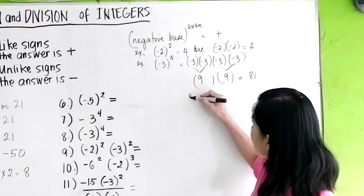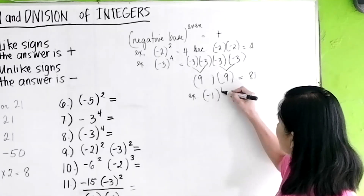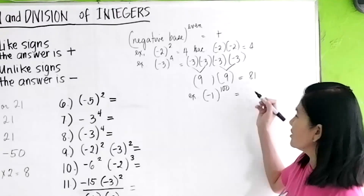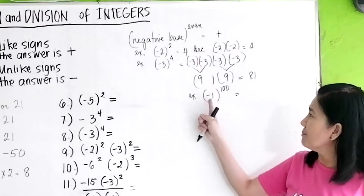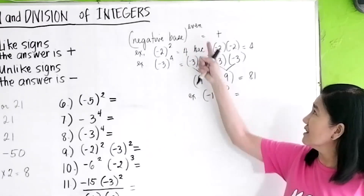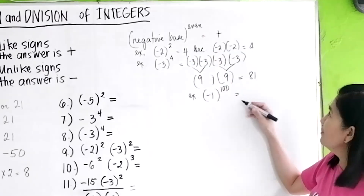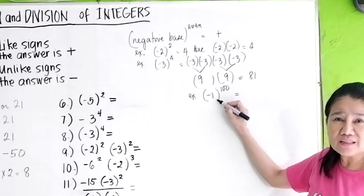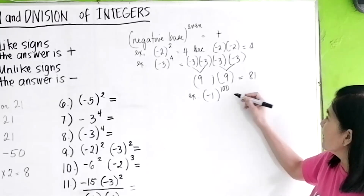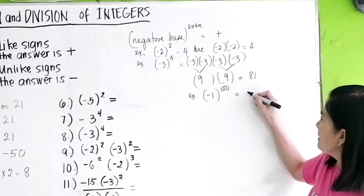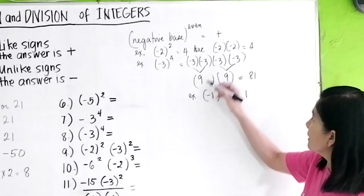So if you have negative 1 raised to the 100th power — the base is negative and the exponent is even — you get 1 times 1 times 1... which is always 1. Since the exponent is even, your answer is positive 1.